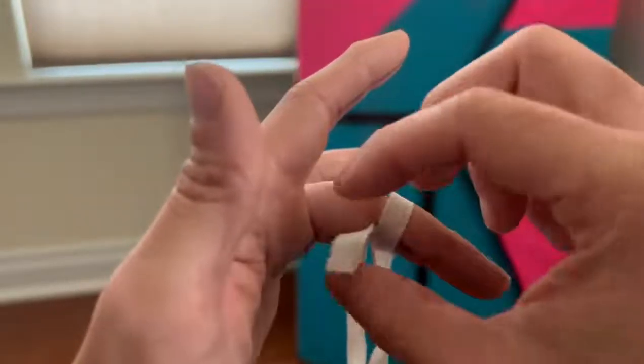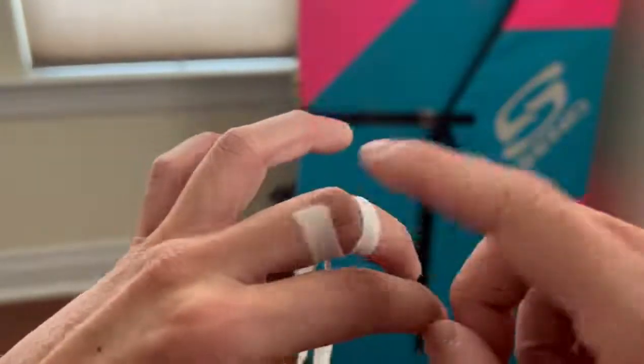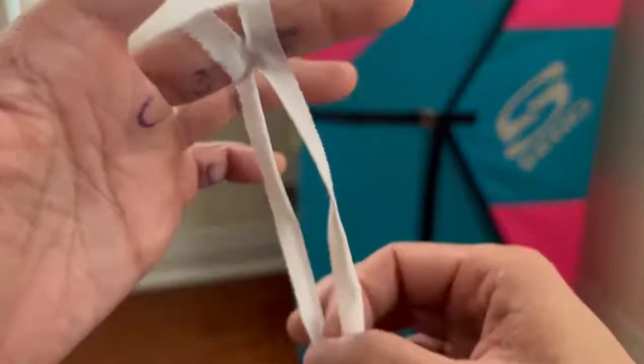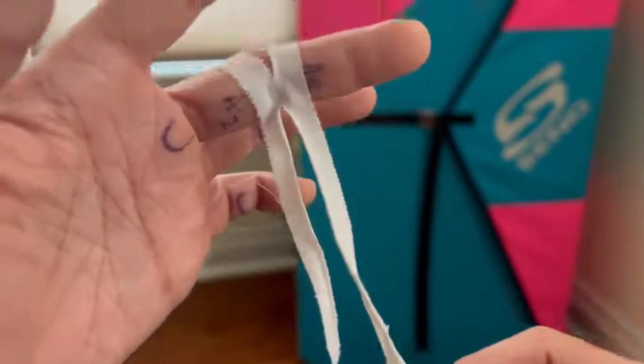So you're going to wrap the short legs around, and you're going to make sure that you don't go over the knuckle because we need this knuckle to bend. You want to make sure there's that gap so that you can bend it still.